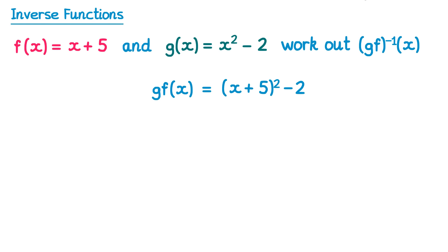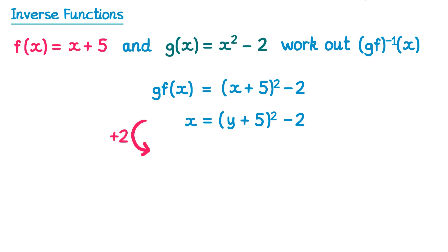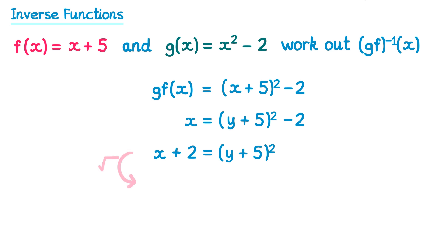We start by finding the composite function gf. Write out the g function but everywhere there's an x, write brackets. So instead of x squared we write (bracket)² − 2, and inside the brackets place the whole f function — x + 5. That gives gf(x) = (x + 5)² − 2. It's much easier to leave it in this form rather than expanding the bracket. Now we find the inverse using the same method, replacing the function with y: y = (x + 5)² − 2.